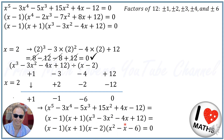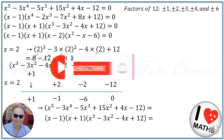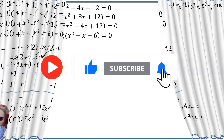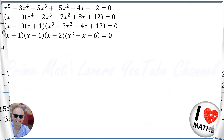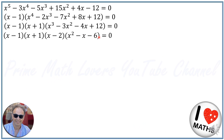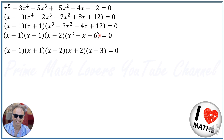Next we solve the quadratic equation x squared minus x minus 6. This is easy to factor as x plus 2 times x minus 3, because positive 2 times negative 3 is negative 6, and positive 2 plus negative 3 is negative 1.